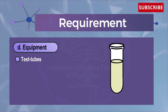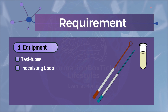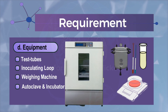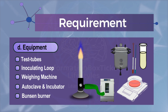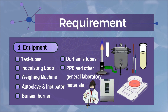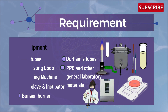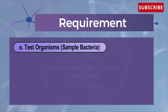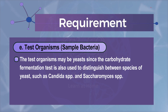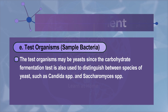Equipment needed includes: test tubes, inoculating loop, vortex/mixing machine, autoclave, incubator, Bunsen burner, Durham tubes, PPE, and other general laboratory materials. The test organisms may be sample bacteria, or yeast, since the carbohydrate fermentation test is also used to distinguish between species of yeast such as Candida species and Saccharomyces species.